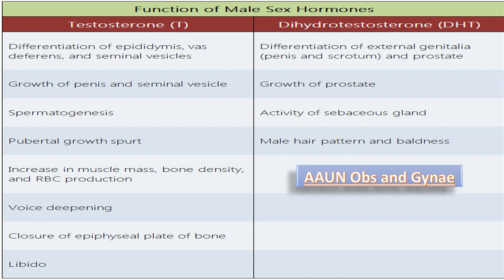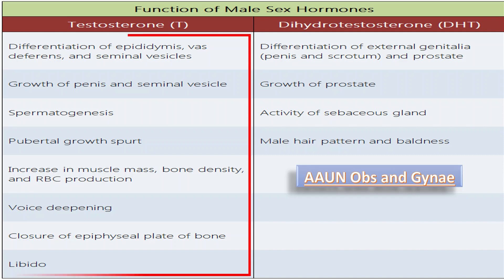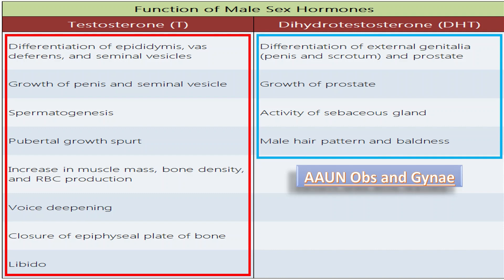This table shows the functions of both testosterone and dihydrotestosterone. Testosterone causes differentiation of the epididymis, vas deferens, and seminal vesicles. It causes growth of the penis and seminal vesicles, spermatogenesis, pubertal growth spurts, increased muscle mass, bone density, and RBC production. It causes voice deepening, closure of the epiphyseal plate, and libido. The role of dihydrotestosterone is differentiation of external genitalia — the penis, scrotum, and prostate — as well as growth of the prostate, activity of the sebaceous glands, and male hair pattern and baldness.